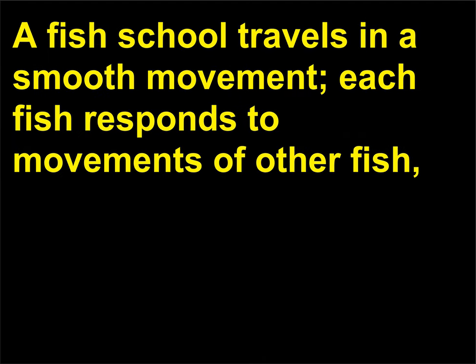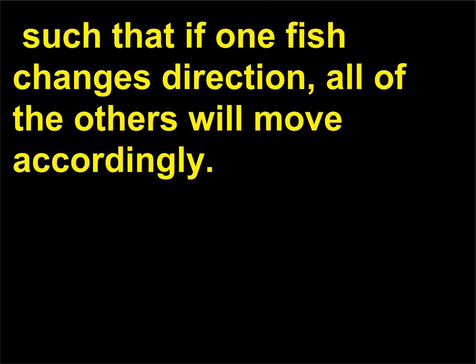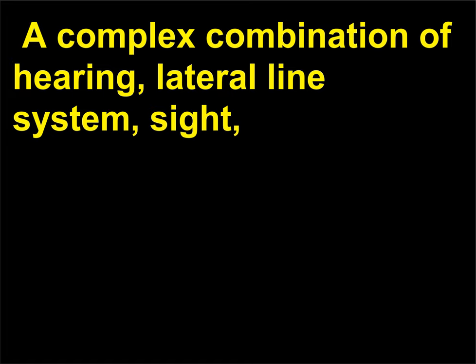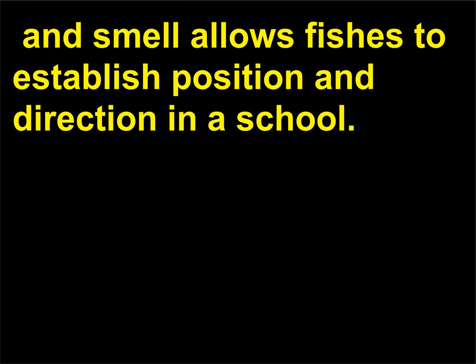A fish school travels in a smooth movement — each fish responds to movements of other fish, such that if one fish changes direction, all of the others will move accordingly. With eyes placed on the side of the head, fishes can see what is next to them and use this to move. A complex combination of hearing, lateral line system, sight, and smell allows fishes to establish position and direction in a school.